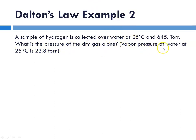And you can look up the vapor pressure of water in a chart in our textbook, and it'll tell me that at 25 degrees C, the partial pressure of water is 23.8 torr.